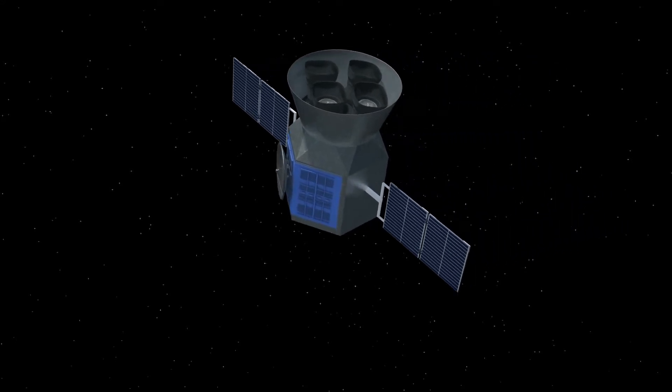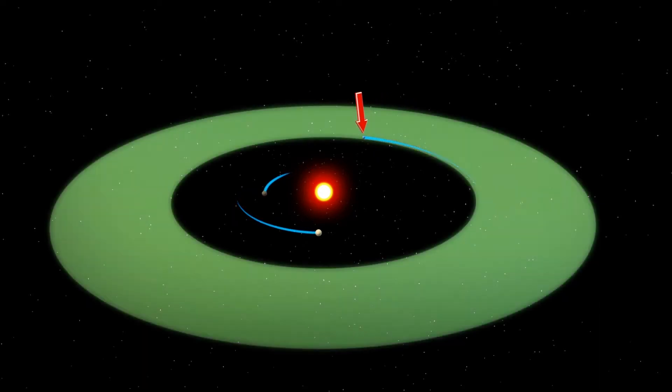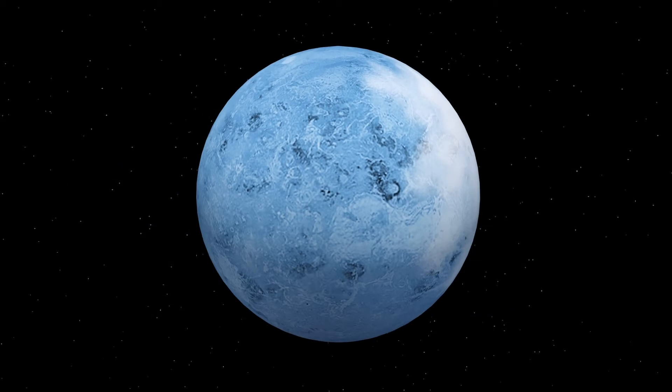NASA's Transiting Exoplanet Survey Satellite, or TESS mission, devised to specifically find Earth-sized planets orbiting nearby stars, has identified TOI-700D as a potential candidate occupying a star's habitable zone where conditions may be just right to allow the presence of liquid water on the surface.